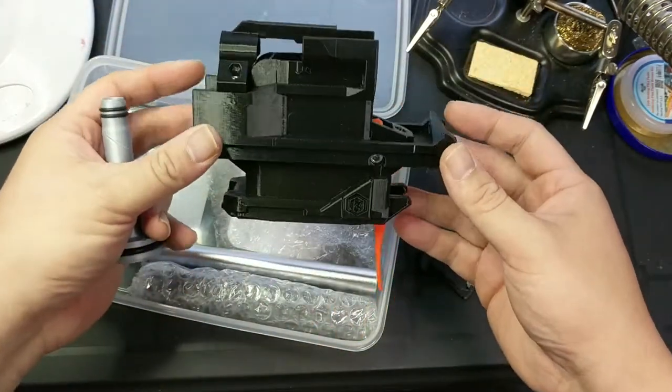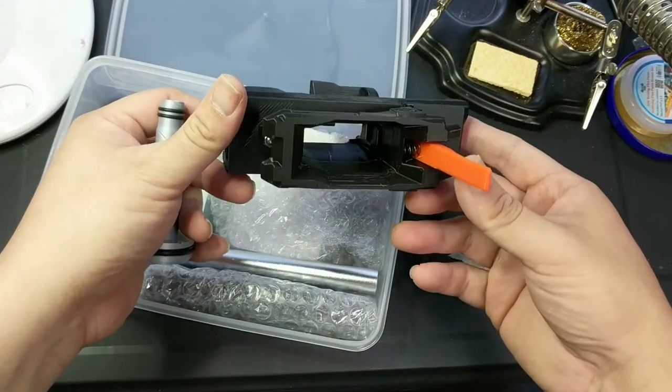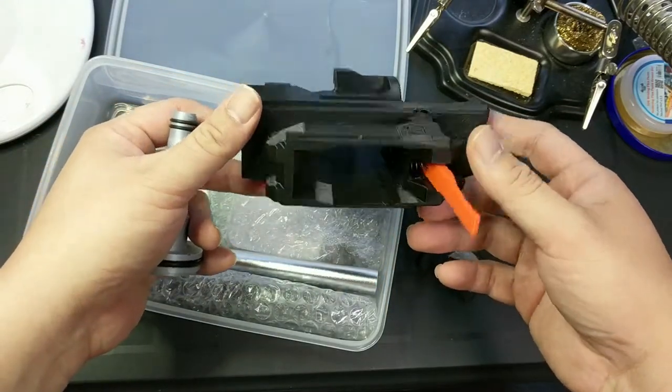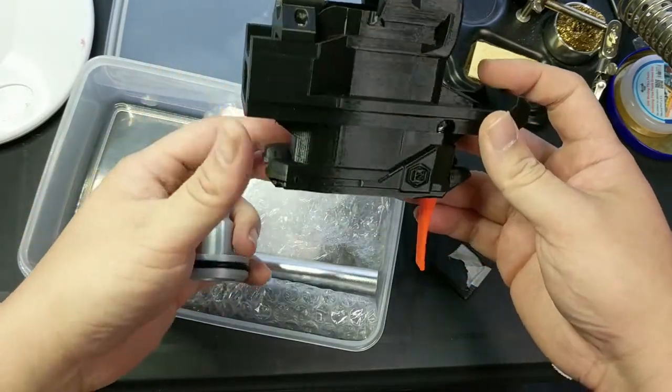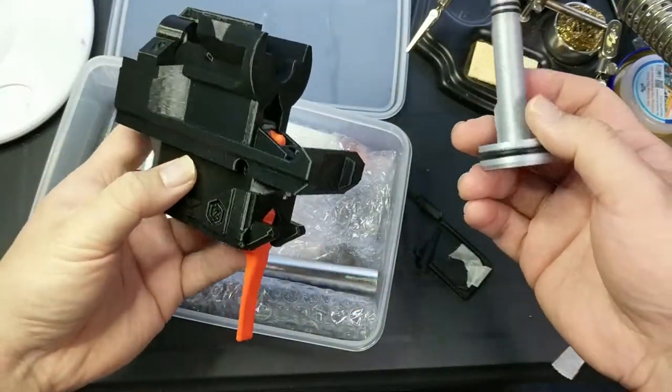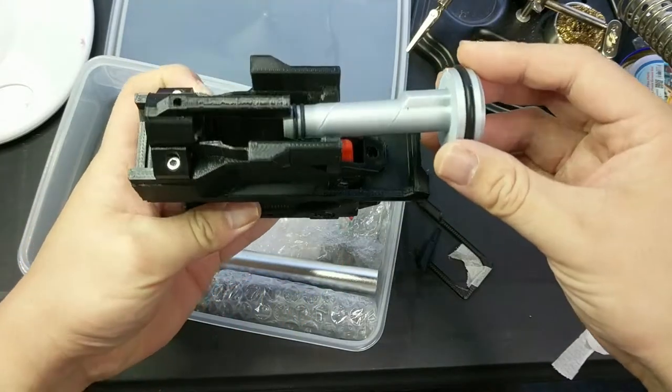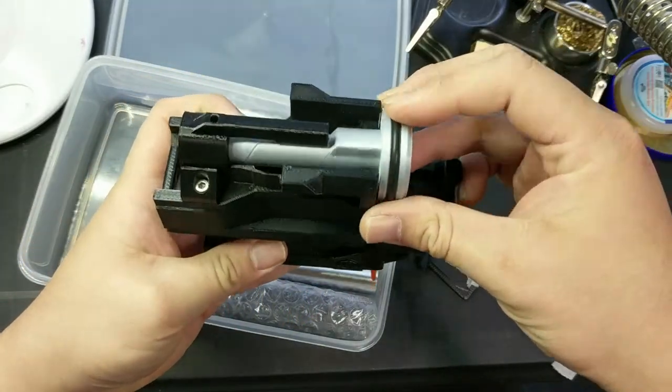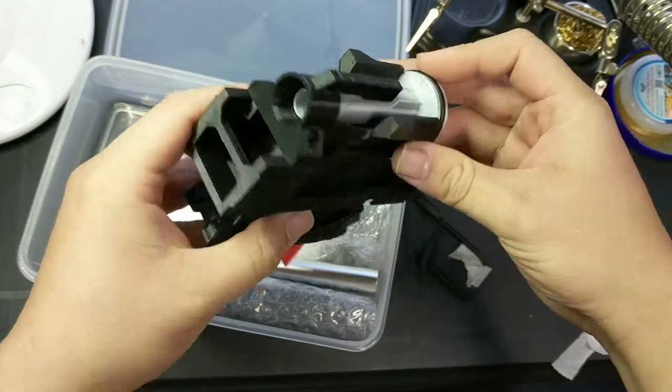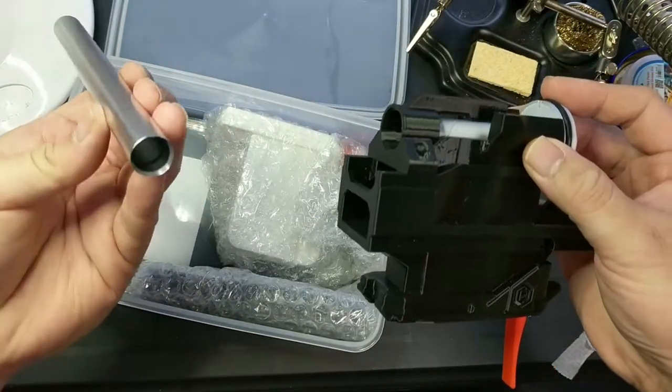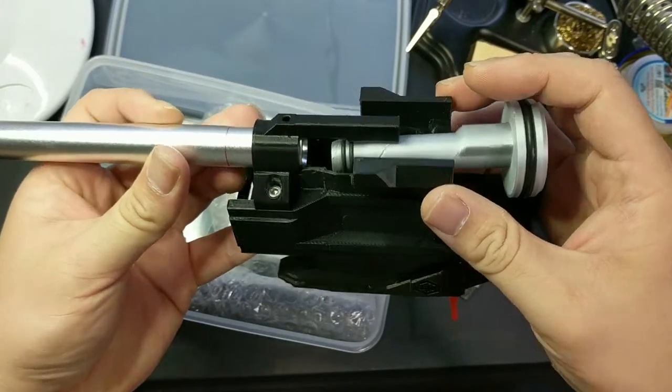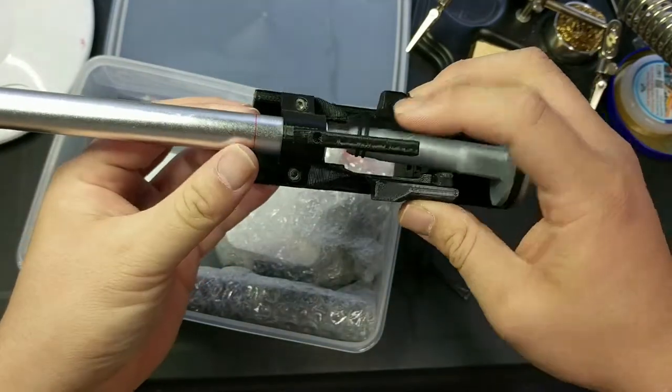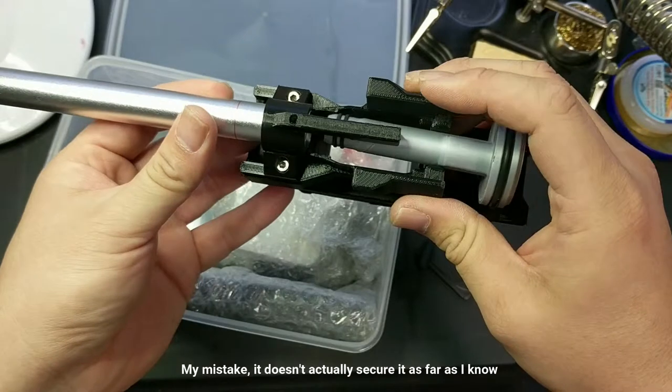So we've got the main magwell, and this will fit into the Chronos itself. And then we have our pusher, which sits just here. And then we have our barrel, which should just sit here. And then there's a screw on top to secure it.